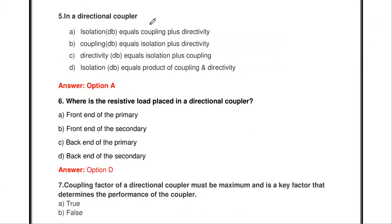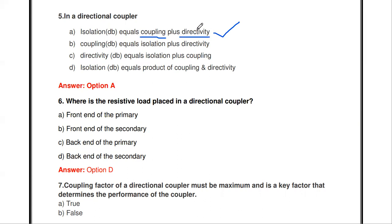Next question: in a directional coupler, isolation in dB equals — coupling plus directivity, coupling plus directivity, directivity equals isolation plus coupling, or isolation equals product of coupling and directivity. The answer is: isolation in dB equals coupling plus directivity. Adding coupling and directivity gives the isolation value.